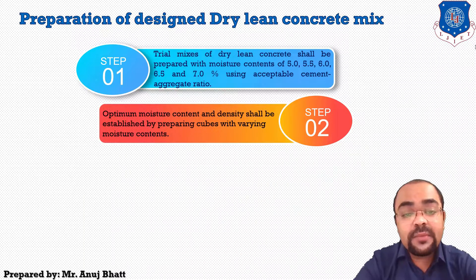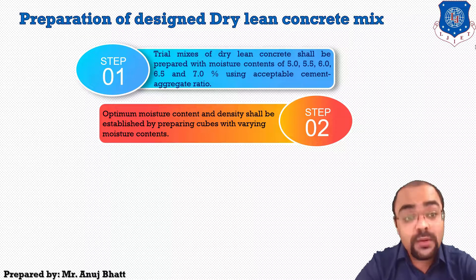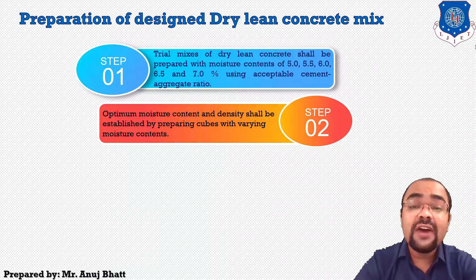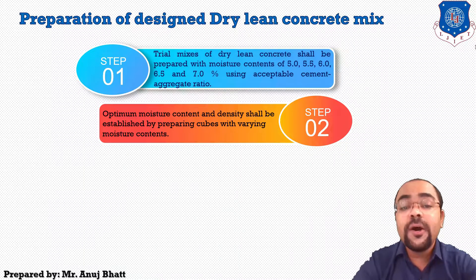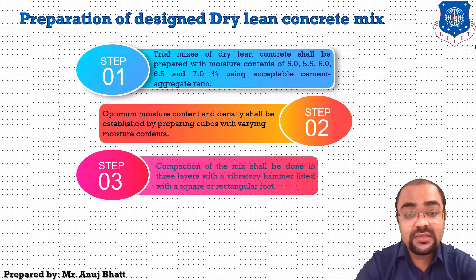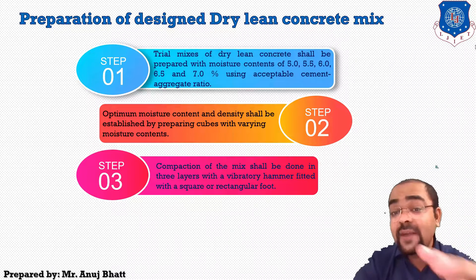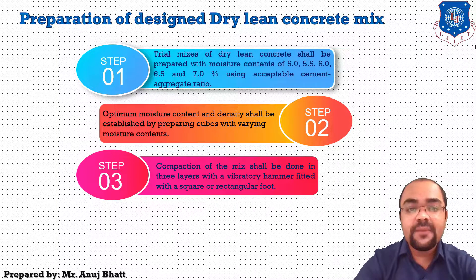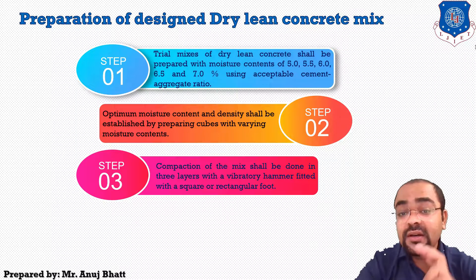The next step is that optimal moisture content and density shall be established by preparing cubes with varying moisture contents. First we use different cement-aggregate ratios, then we prepare cubes with different moisture contents. Compaction of that mix shall be done in three layers with a vibratory hammer fitted with a square or rectangular foot, depending on the type of hammer used.